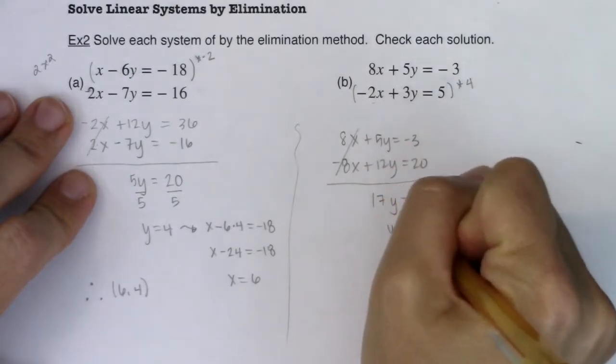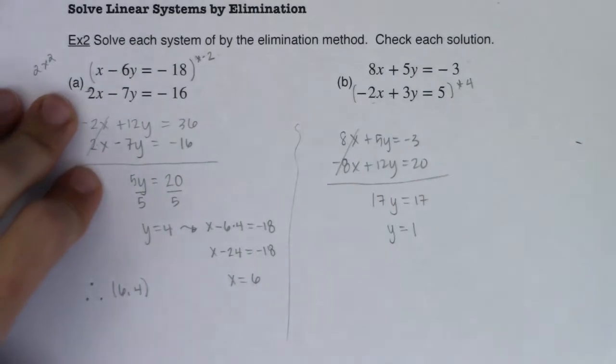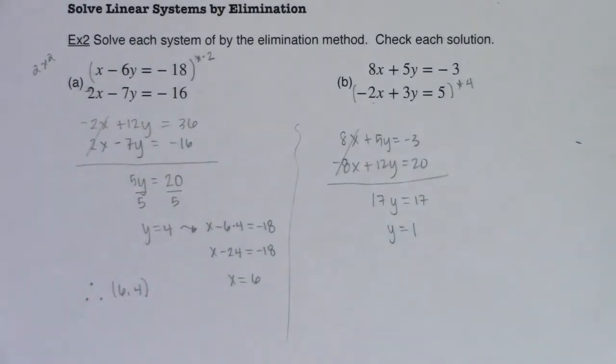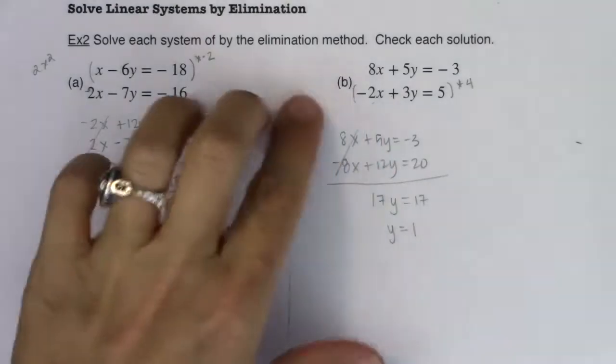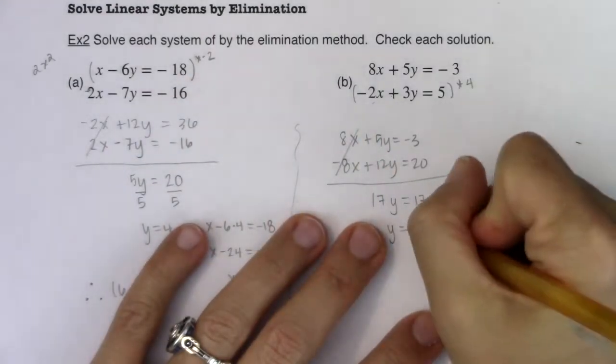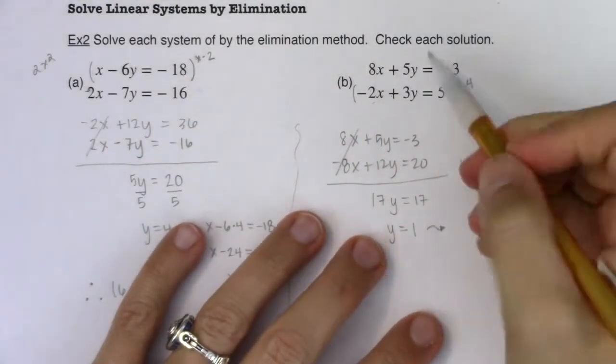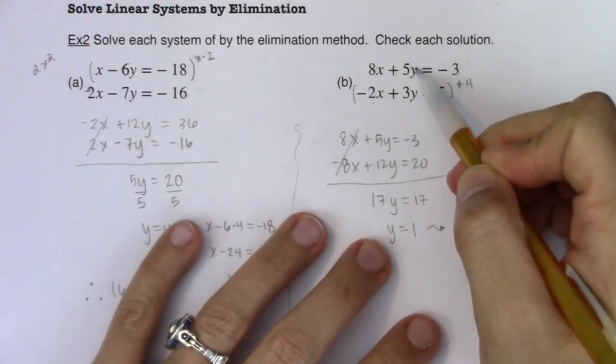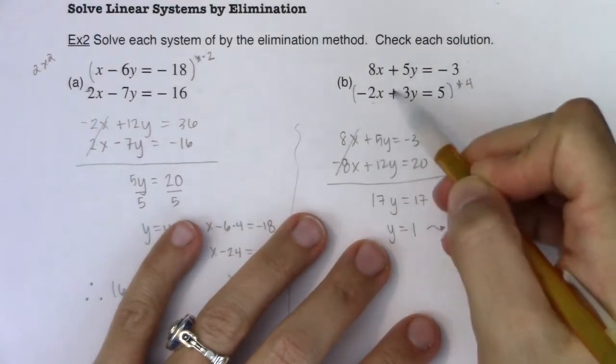When I divide both sides by 17, I'm going to get y equals 1. That's great. That's not the entire answer. You owe me an ordered pair when we have 2 by 2 systems. So I can take y equaling 1 and plug it into the first equation or the second equation. It doesn't matter.